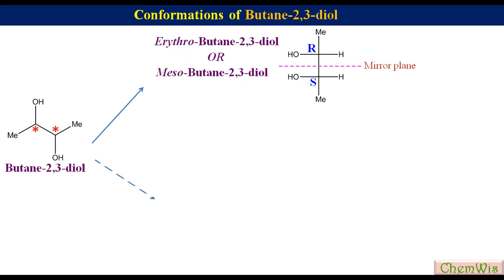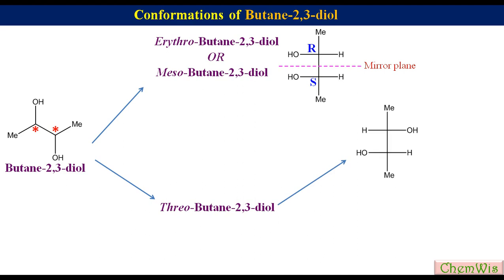The threo-butane-2,3-diol category has two isomers. The first has absolute configurations 2S and 3S, and the second has absolute configurations 2R and 3R. Both are optically active.